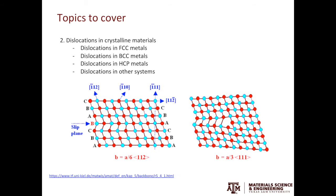In the second part, we'll cover dislocations in crystalline materials. We will discuss dislocations in FCC, BCC, and HCP metals, as well as in other crystal systems. The example shown on this slide shows the partial dislocation core structures in FCC metals.